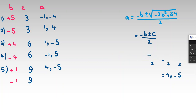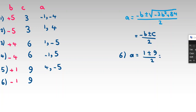Case 6: b = negative 1, c = 9. Then a = (1 ± 9) / 2. That gives (1 + 9) / 2 = 5, and (1 minus 9) / 2 = negative 4. So a = 5 or negative 4.